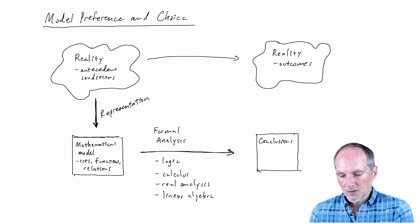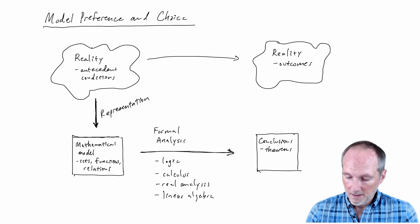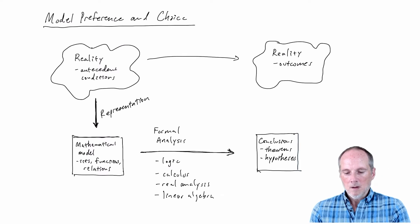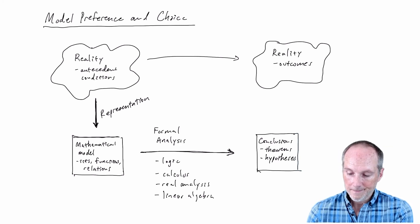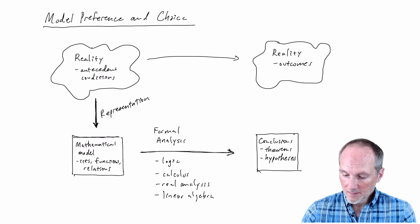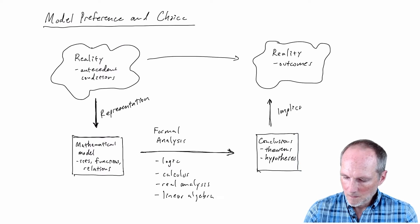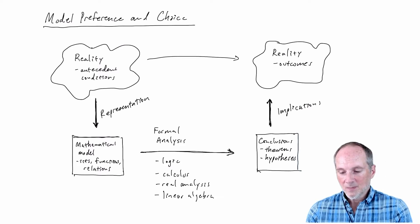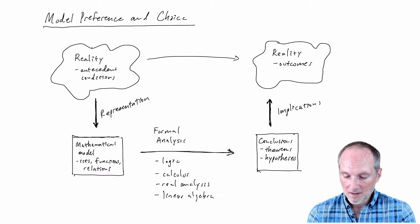So we apply those tools and we reach conclusions which can be mathematical theorems, they can be testable hypotheses but they are conclusions that are telling us something about this process in reality that we're interested in and these are going to have some implications and hopefully this whole diagram commutes in some way. Hopefully there's some correspondence between those implications and the outcomes that you're interested in.